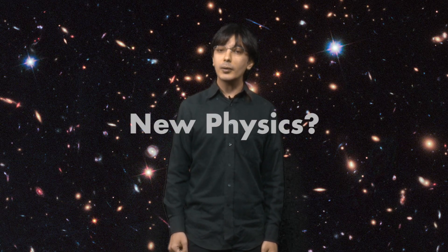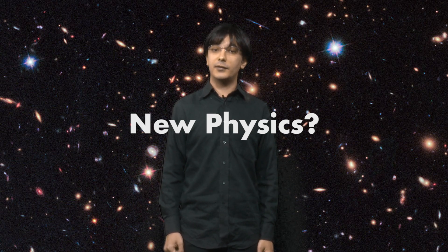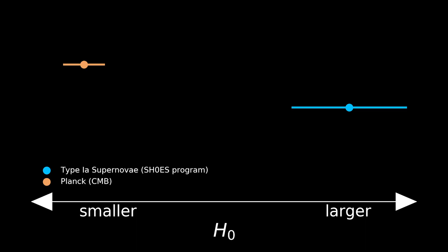There could be a problem with one or both of these methods, but both groups of astronomers have checked the results and are confident that they are doing things correctly. A more exciting possibility is that there is something new about physics which we don't understand yet, but which is the real cause of this discrepancy. The disagreement between the two methods of measuring H0 has generated a lot of excitement, but also debate among astronomers. While there is no resolution yet, what seems to be clear is that we need alternate methods of determining H0 to provide an independent measurement.